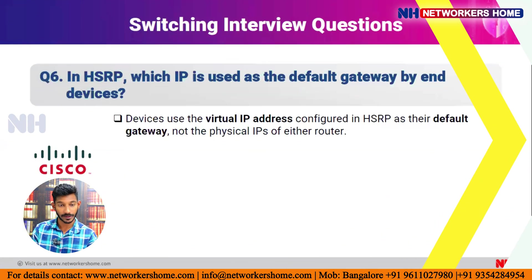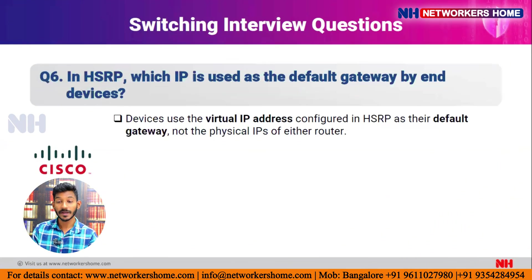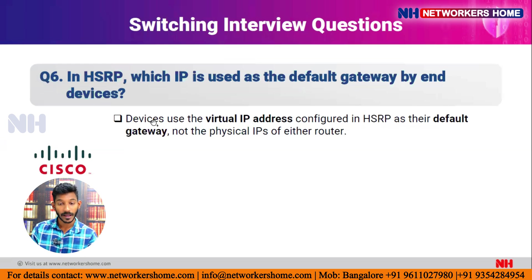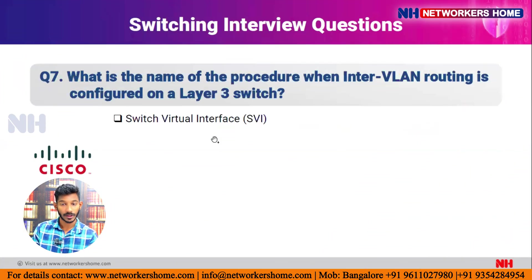Question six: in HSRP, which IP is used as the default gateway by end devices? HSRP is a redundancy protocol — both routers have their own physical IPs, but instead of those, a virtual IP is configured. That virtual IP is assigned as the default gateway on end devices like PC1 and PC2, not the physical IPs.